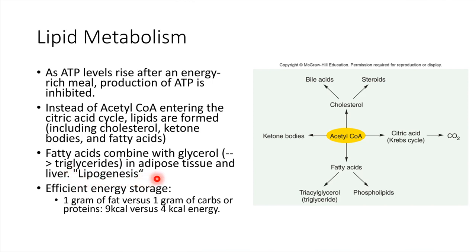Lipogenesis is an alternative way to store energy, and it's a very efficient way. If we compare by mass — 1 gram of fat versus 1 gram of carbs like glycogen — 1 gram of fat can store 9 kilocalories of energy versus 1 gram of carbohydrates which can store just 4 kilocalories. So lipids provide a very space-efficient and weight-efficient way to store energy for use down the road.